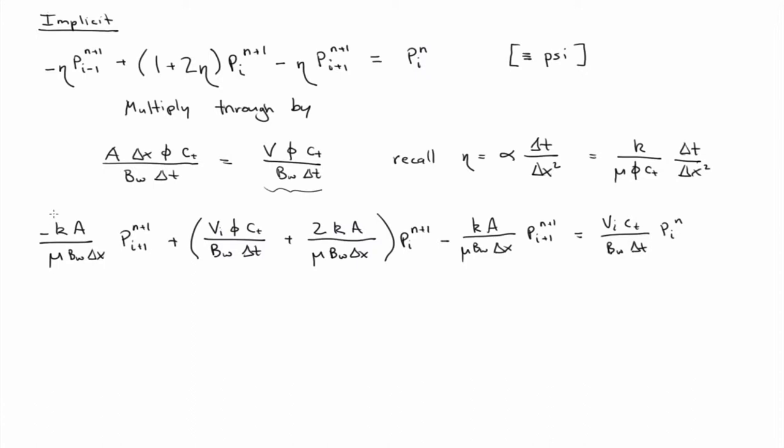But yeah, I mean, so like we have, this is length squared, area is length squared. Delta x is length, right? So we have length to the fourth over length. So in the numerator, we have length cubed. That's volume, right? And then in the denominator, we've already canceled the delta x. The formation volume factor is unitless. And the viscosity has units of pressure time. Pressure times time and then we have the actual pressure here. So we have a pressure in the numerator, those two cancel and we're left with a volume per time, right?